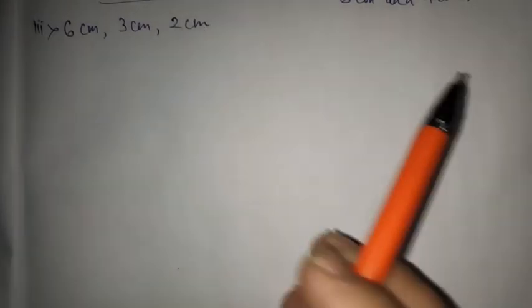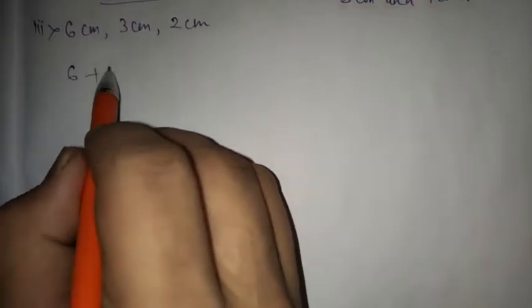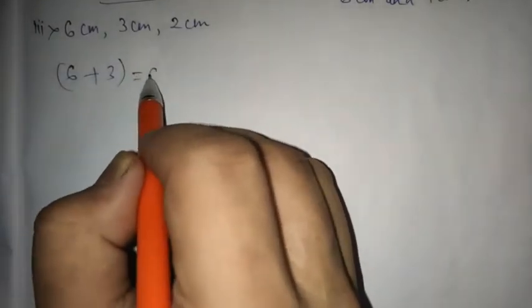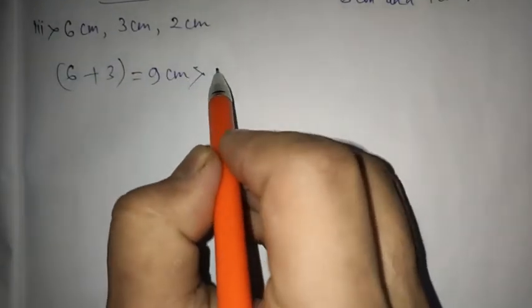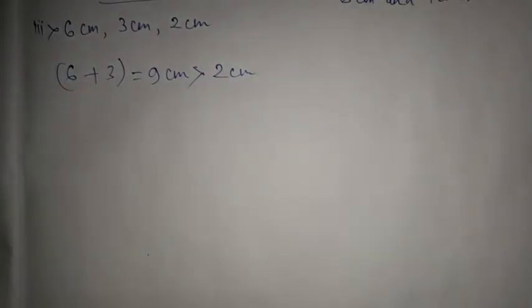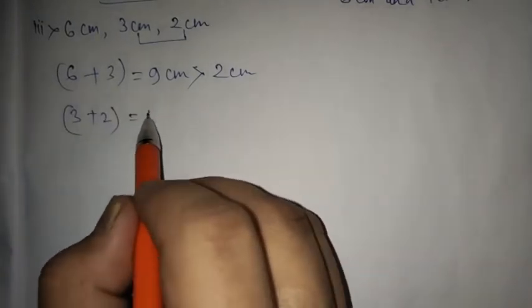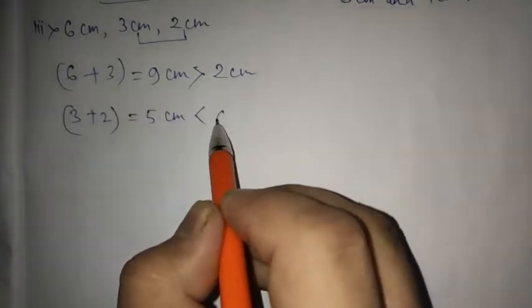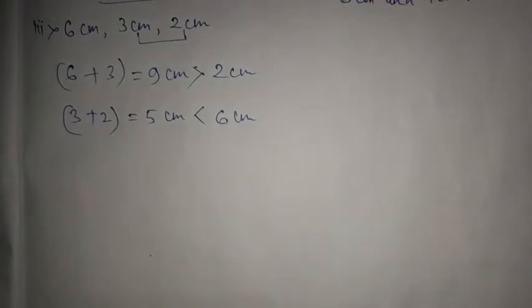So today we have part 3. The given sides are 6 cm, 3 cm and 2 cm. Let us check 6 plus 3 first — it is 9 cm. Yes, 9 cm is greater than 2 cm. But let us look at another combination: 3 plus 2 is equal to 5 cm, which is less than 6 cm.